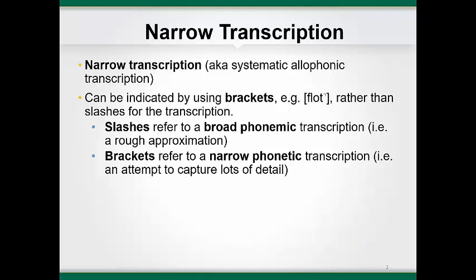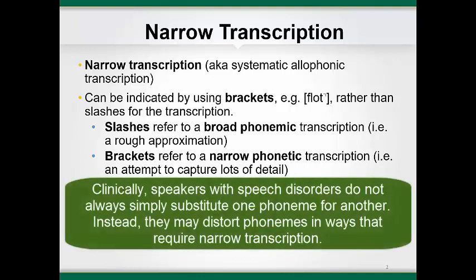We are used to hearing these different allophones as very similar to one another because we've learned to ignore these acoustic differences much of the time, but we do notice the difference when they occur in the wrong context. It's important to learn to distinguish allophonic differences in English and to transcribe them accurately, because speakers with speech and language impairments do not make perfect substitutions of one phoneme for another. They may use an allophone in an inappropriate context, or quite frequently, they may distort a phoneme so that it is not a standard version of any phoneme in the language.